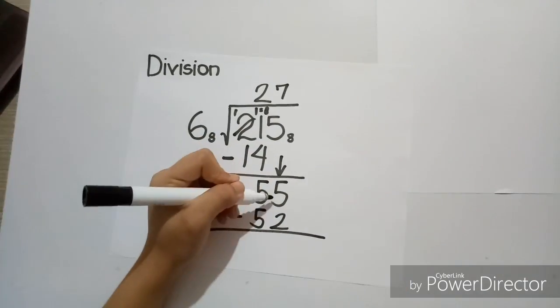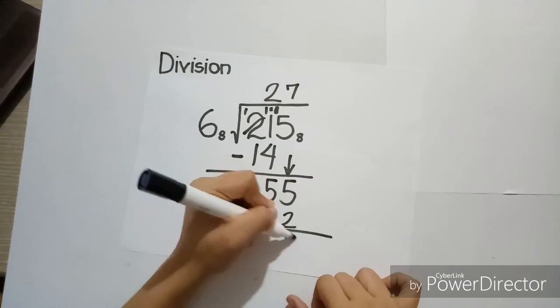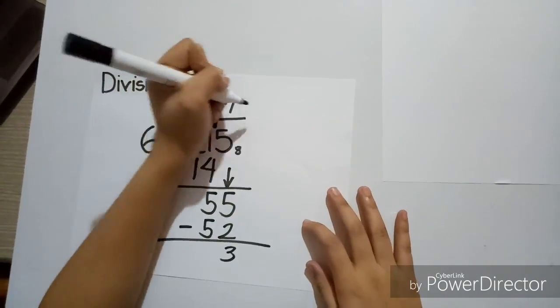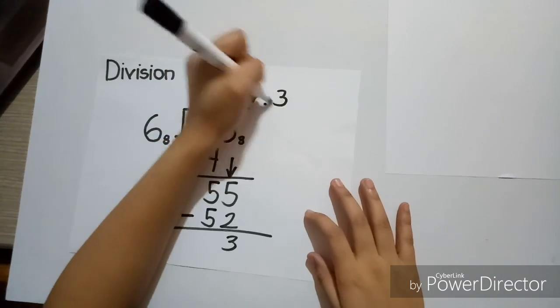Now, 5 minus 2 is equal to 3. 5 minus 5 is equal to 0, which will give us the final answer, 27 remainder 3.